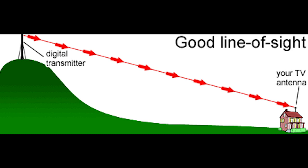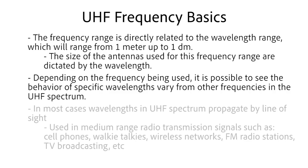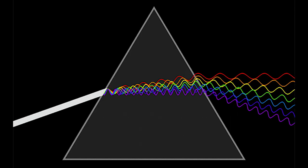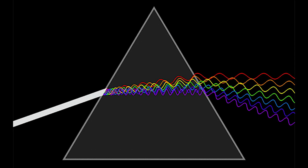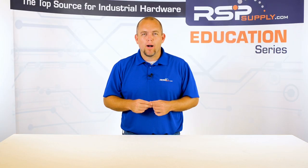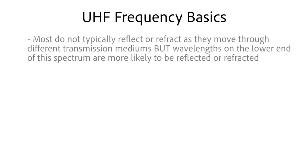When referencing line of sight propagation, this means the wavelength will travel in a straight line from the transmitting antenna to the receiving antenna. This type of transmission is used in medium range radio transmission signals such as cell phones, walkie-talkies, wireless networks, FM radio stations, TV broadcasting, etc. These wavelengths do not typically reflect or refract or change directions as they move through different transmission mediums like hills or buildings or other obstacles that might interrupt the wavelength. Wavelengths on the lower end of the spectrum have a much higher likelihood of being reflected or refracted than wavelengths on the higher end of the spectrum.